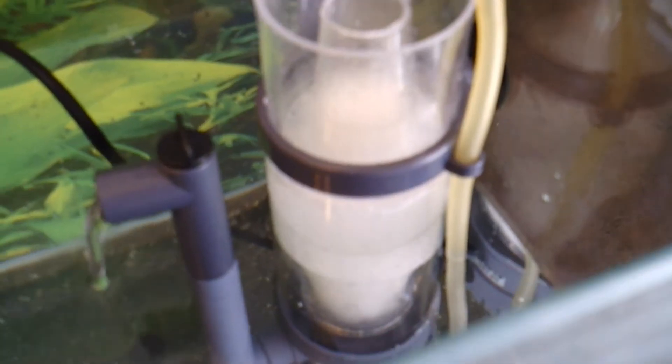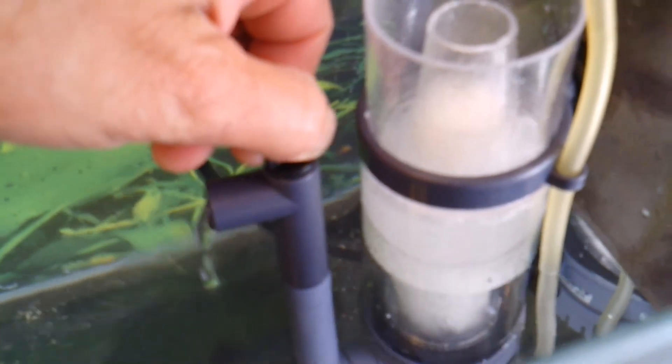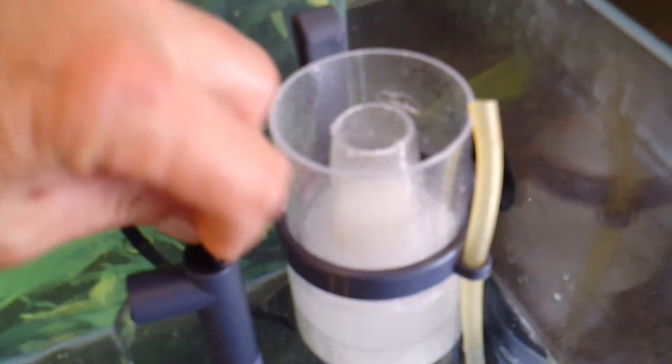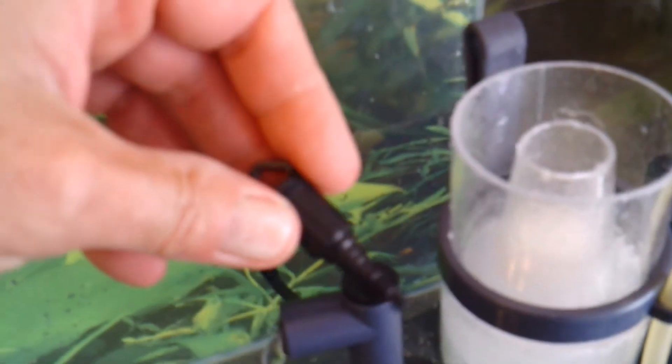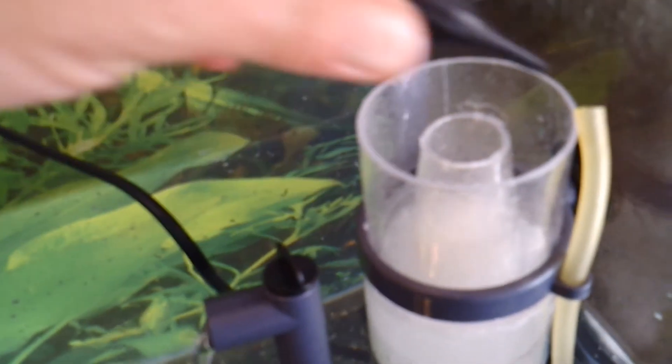So there's two ways you can adjust this. One is the outflow pipe. You restrict the water flow on the outflow pipe and it raises the bubbles as you see. And the other one is this cheesy little air restrictor. It goes on the end of this. You can close this in and out, and also it's another way to adjust it.